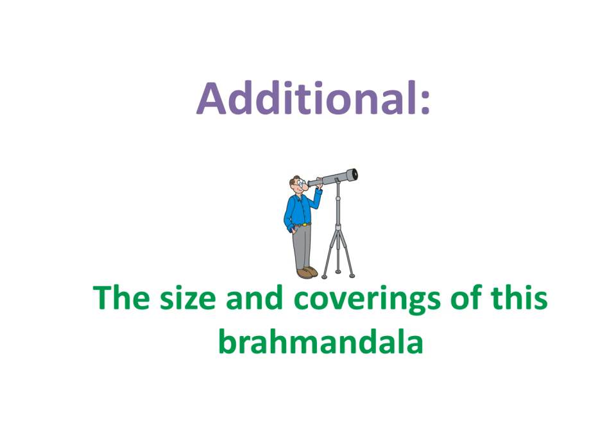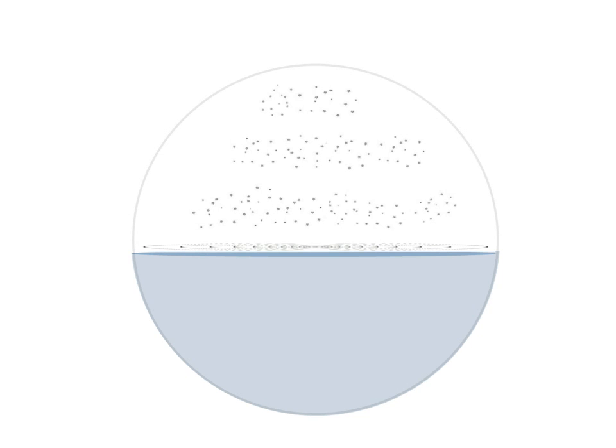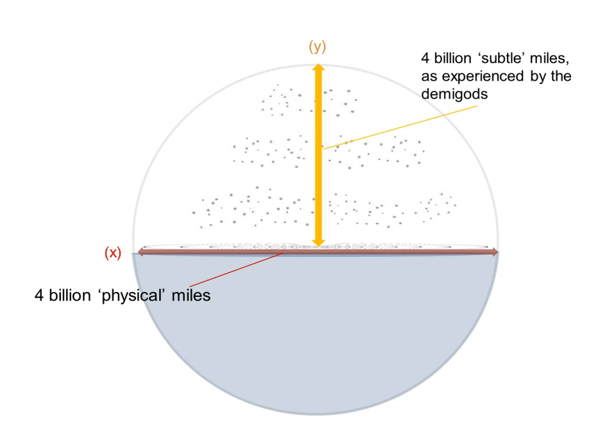Additional information — size and coverings of this Brahmandala universe. Reminding ourselves of what we were looking at earlier: this huge circular shape of the inner universe, with the bottom half being the Garbhodaka Ocean, and above that all the various stars and planets. There we have the Bhu-mandala. The x-axis from one part to the other is about 4 billion physical miles — this corresponds with the solar system. However, the y-axis, the vertical dimension, is about 4 billion subtle miles as experienced by the demigods.